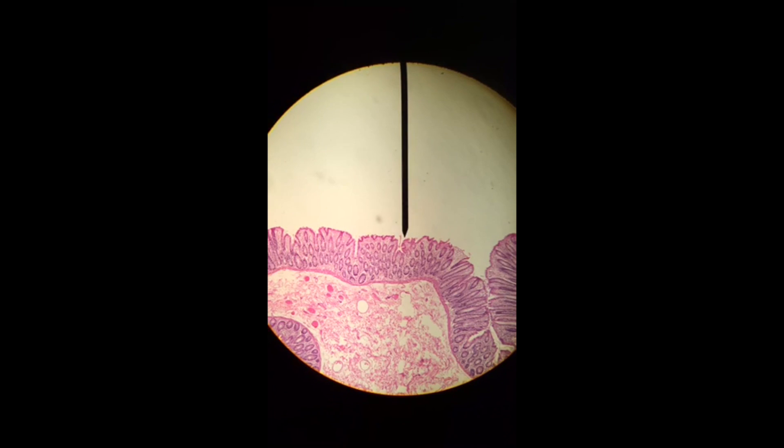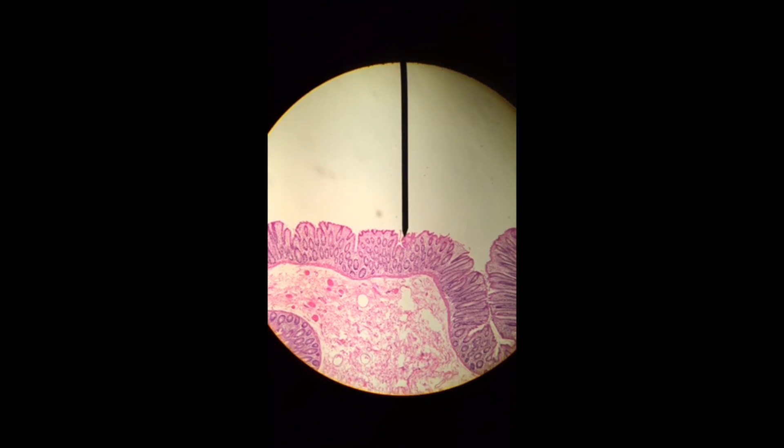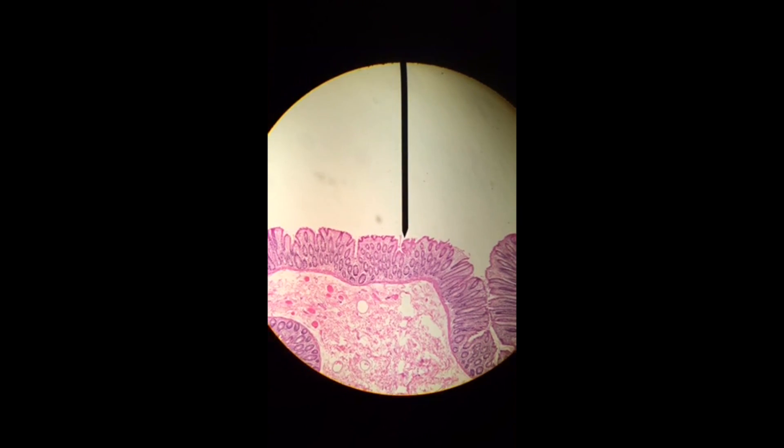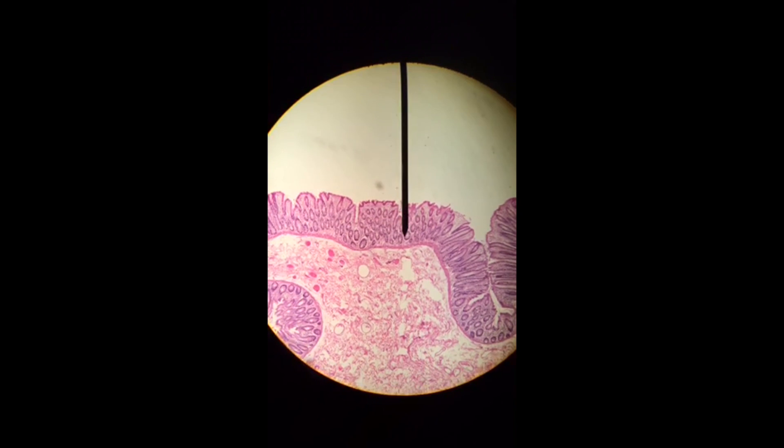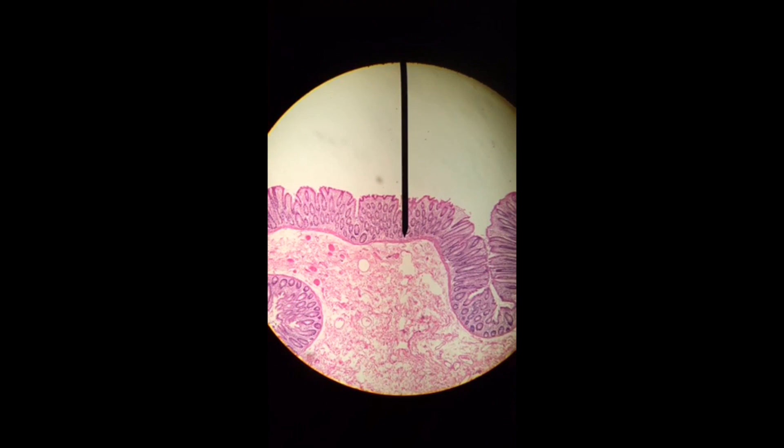We're looking at the histology of the large intestine or the colon. We're going to work through our four layers. The first of which we're pointing at now is going to be our mucosa epithelium.